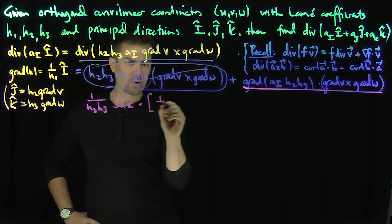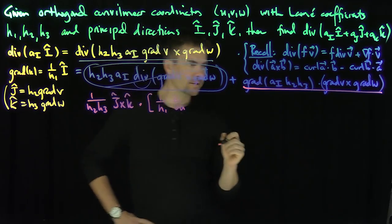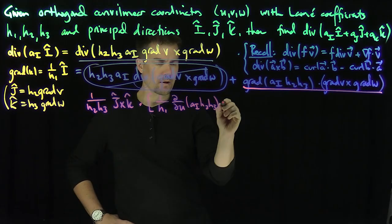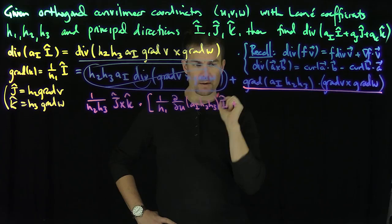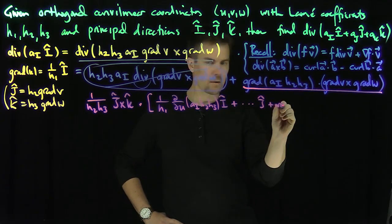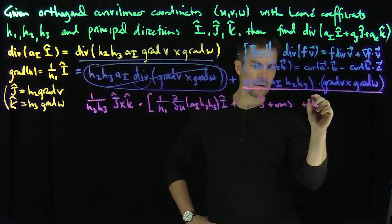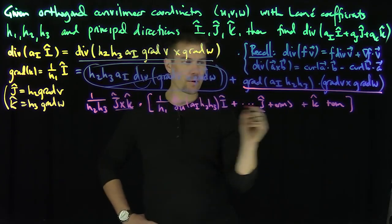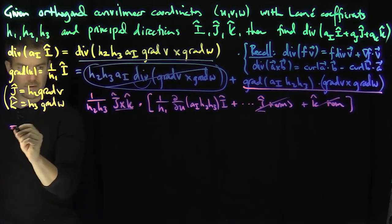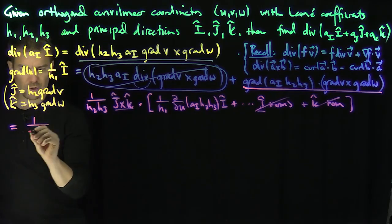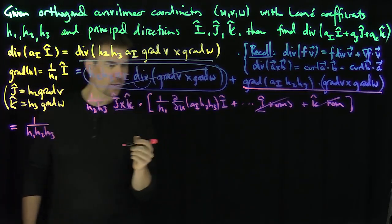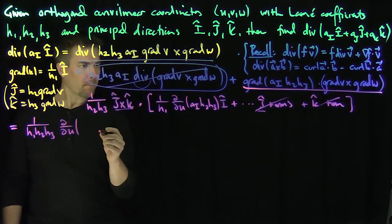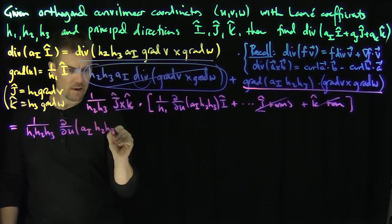Taking the dot product, we compute ∂/∂u of (a_i h2 h3) times î plus other terms. Since ĵ × k̂ is perpendicular to ĵ and k̂, those terms drop out in the dot product, and we get the first term in our divergence formula: (1/h1 h2 h3) · ∂/∂u(a_i h2 h3).